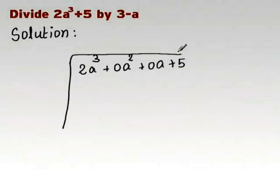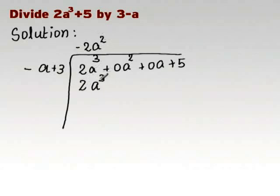Our first term in the quotient is minus 2a squared. Hence, we get 2a cubed minus 6a squared. We get 6a squared plus 0.